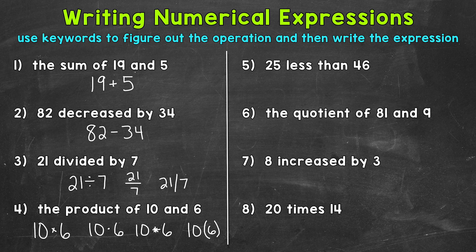And let's move on to number 5, where we have 25 less than 46. So when we see less than, we actually switch the order. This is going to be subtraction. We're taking 25 less than 46. So it's going to be 46 minus 25. So when you see that less than, we flip the order there.